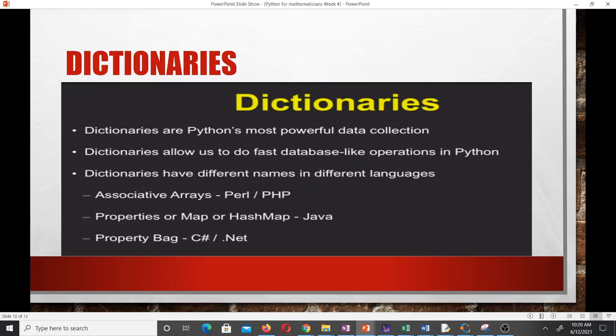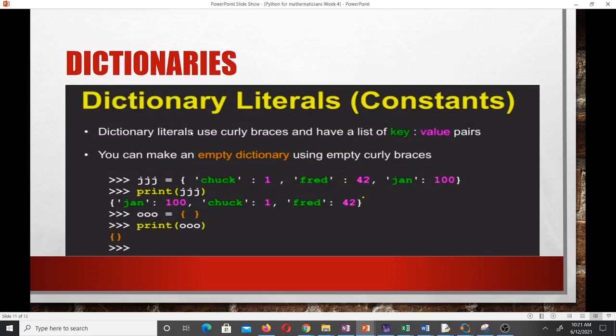Dictionaries are Python's most powerful data collection type. Dictionaries allow us to do fast database-like operations in Python. Dictionaries have different names in different languages. In Perl or PHP it's called associative arrays, in Java we call them properties or map or hash map, and in C# or .NET we call them property bag or list. Dictionary literals use curly brackets and have a list of key-value pairs. Dictionaries always have their key and their value. You can make an empty dictionary using empty curly braces.